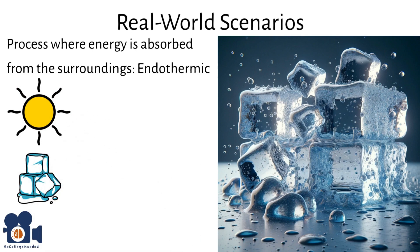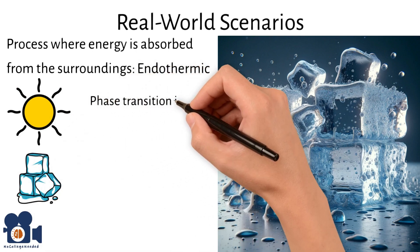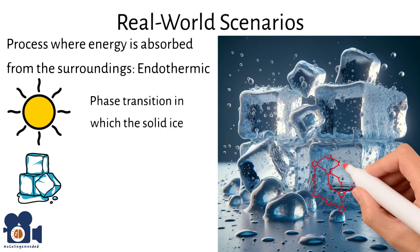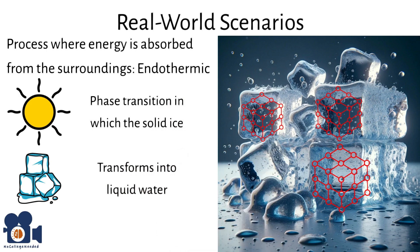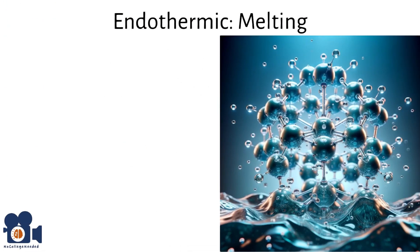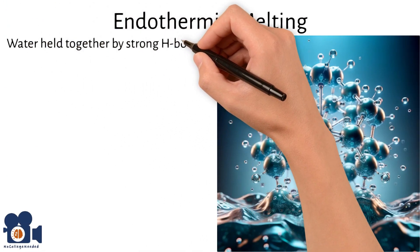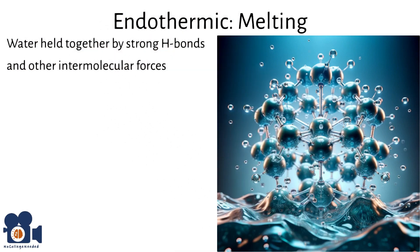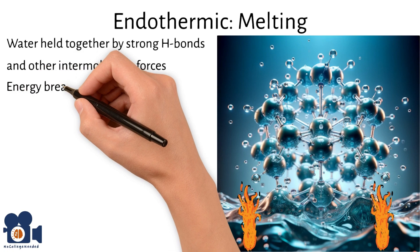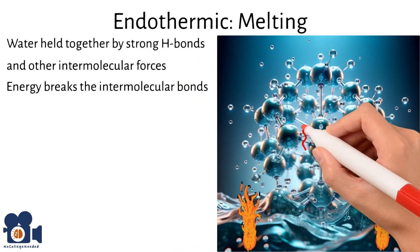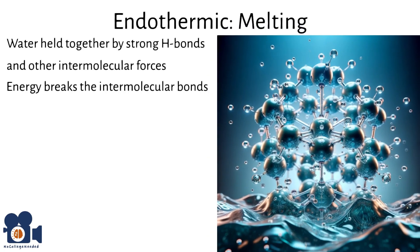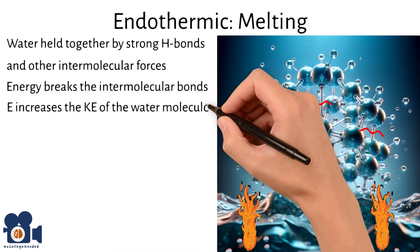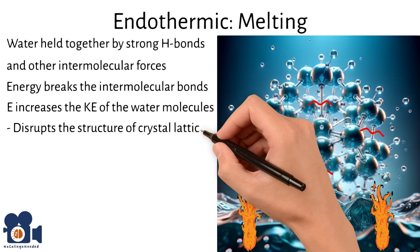This is considered a phase transition in which the solid ice, a well-defined structure of water molecules held in a crystal lattice, transforms into liquid water. During melting, the water molecules are held together by strong hydrogen bonds and other intermolecular forces. As heat is applied, this energy breaks these intermolecular forces between the molecules in the ice lattice. The absorbed energy increases the kinetic energy of the water molecules, which disrupts the organized structure of the solid crystal lattice.